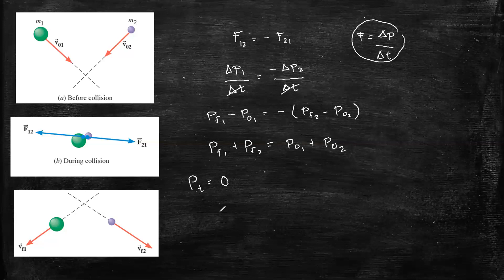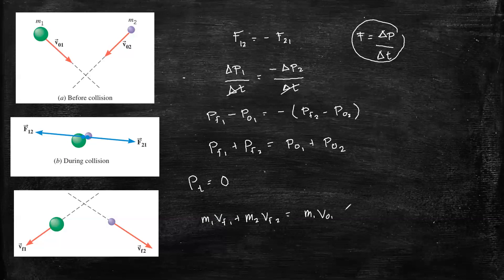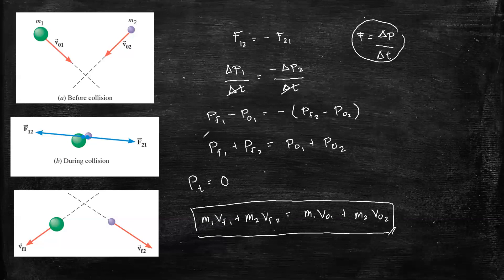Interpreting this in terms of mass and velocity, we have: M1 times the final velocity of object one, plus M2 times the final velocity of object two, equals M1 times the initial velocity one, plus M2 times the initial velocity two. This is our law of conservation of momentum.